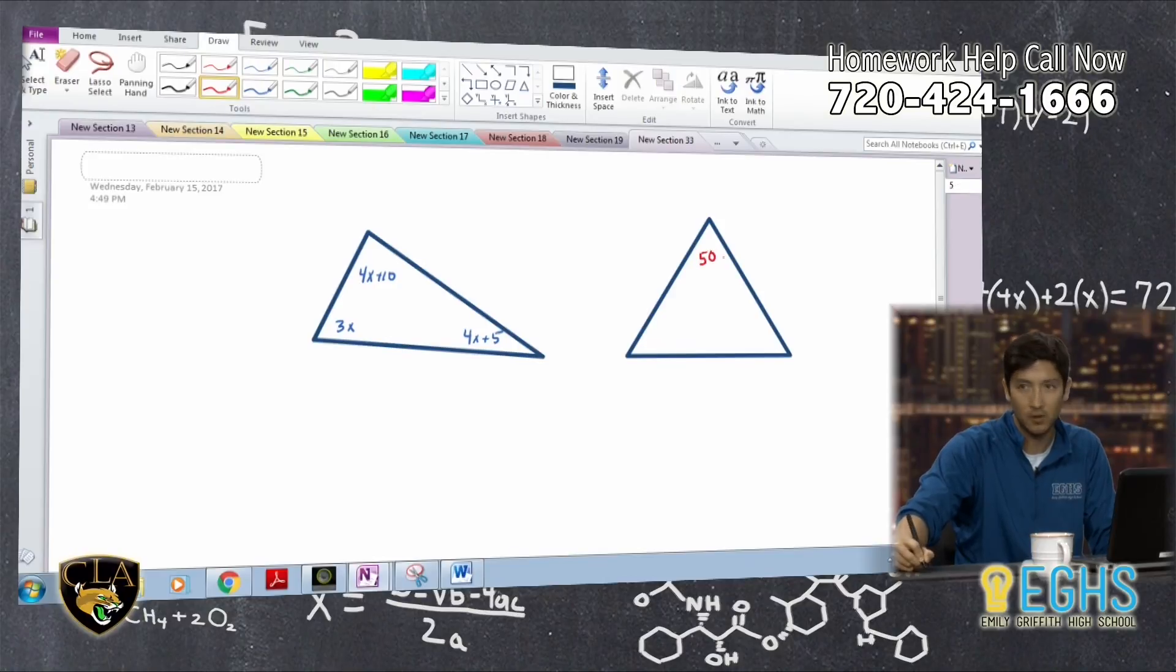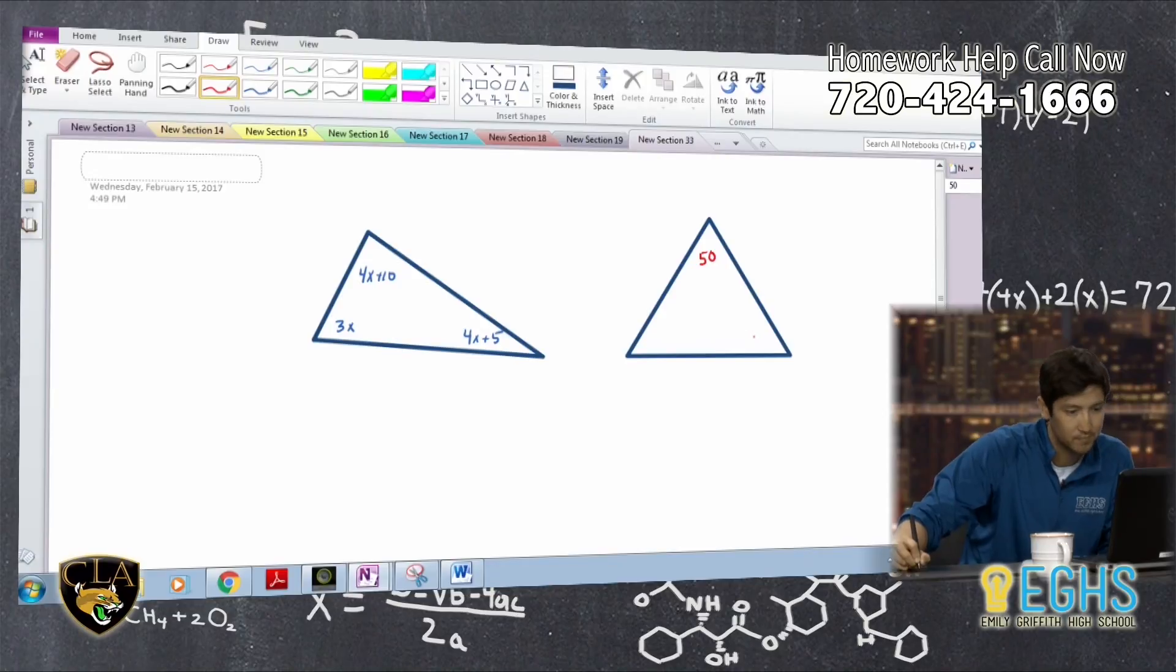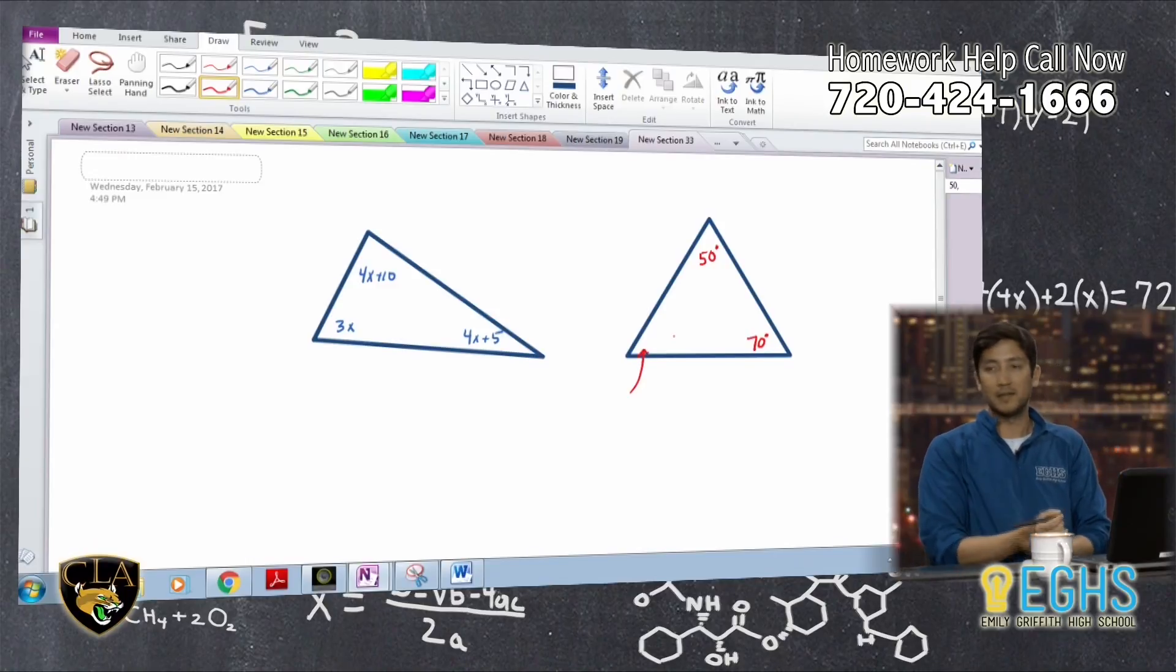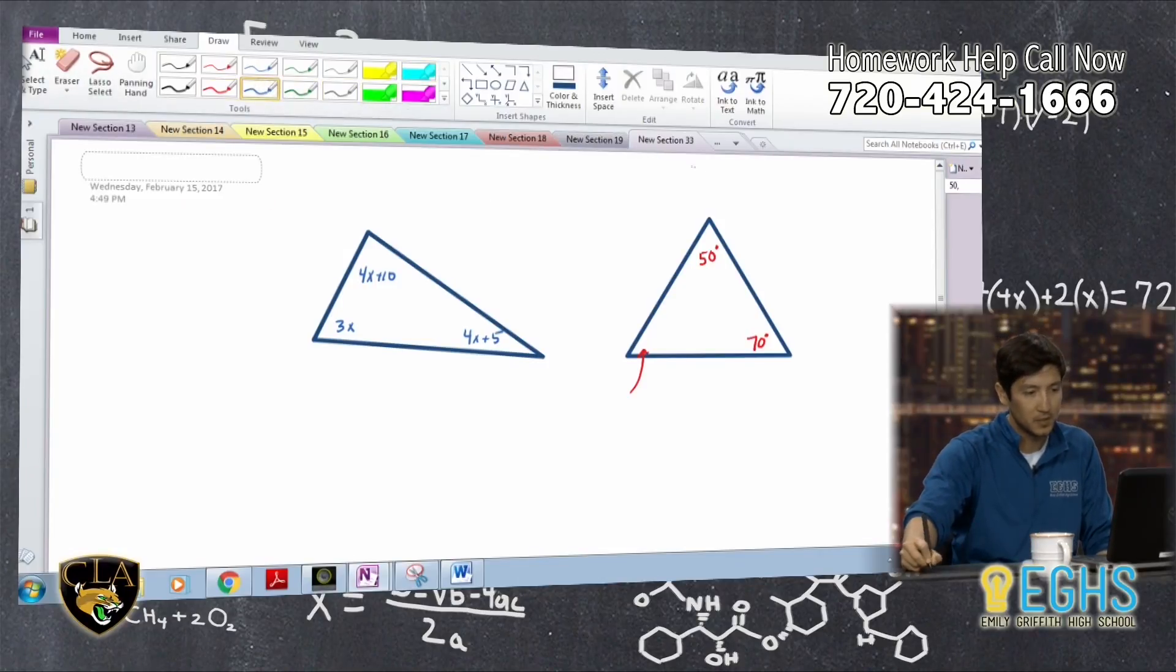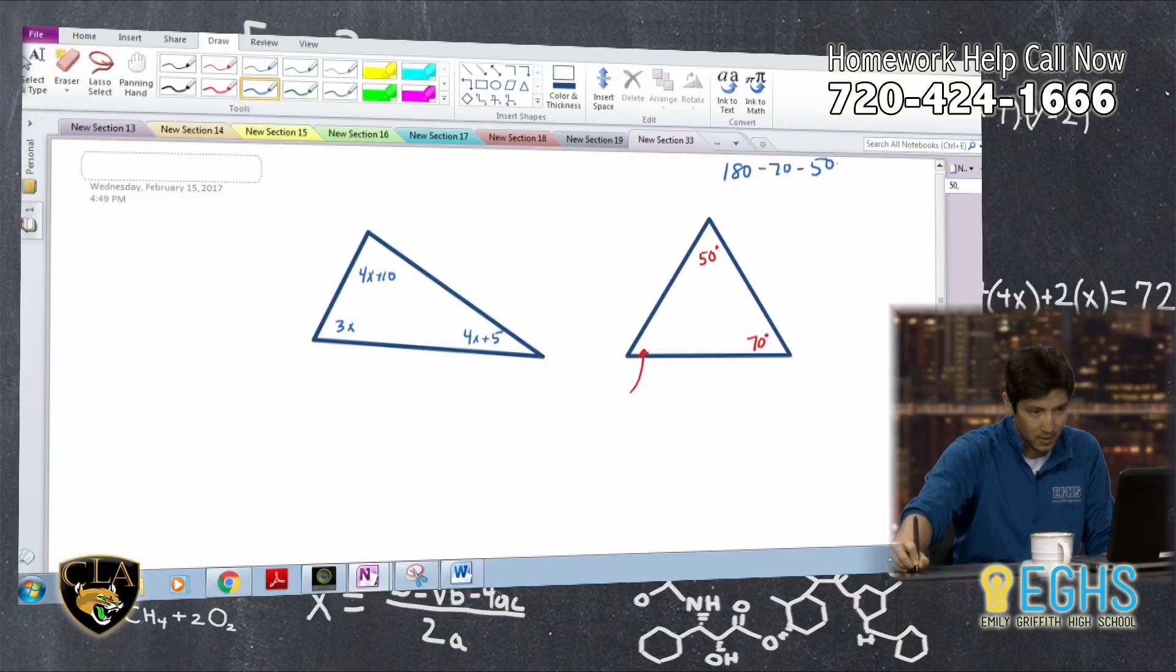I know this angle is 50 degrees. I know this one is, let's call it, I don't know, 70 degrees. How would I find this angle right here? And so a lot of times what my students do is they just say, well, I know they add up to 180, so let me just do 180 minus 70 minus 50, and then you get 60 degrees.